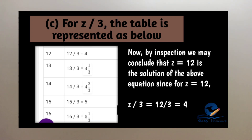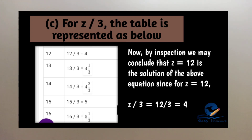This equation is Z by 3 is equal to 4. Z is 12 gives the answer 4. So, by inspection, we may conclude that Z is equal to 12 is the solution of the above equation. Since Z by 3 is equal to 12 by 3 is equal to 4.